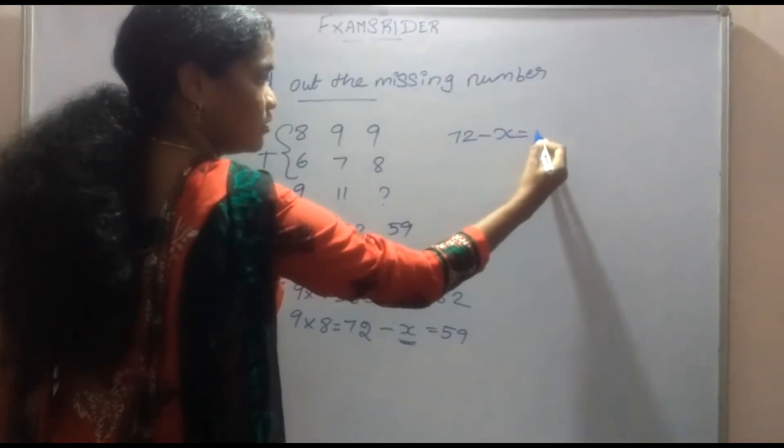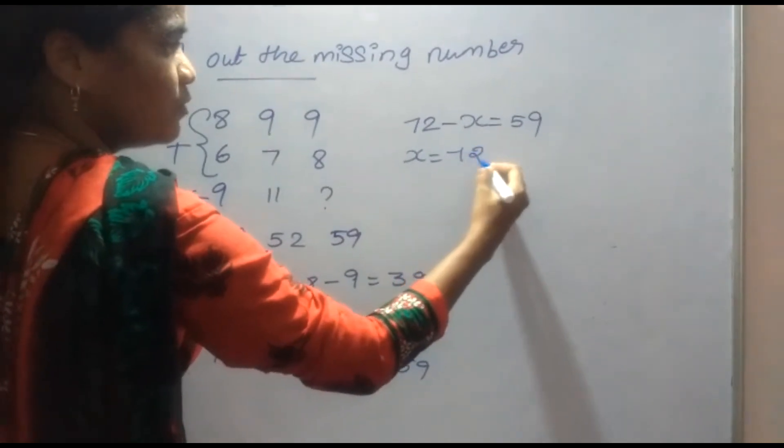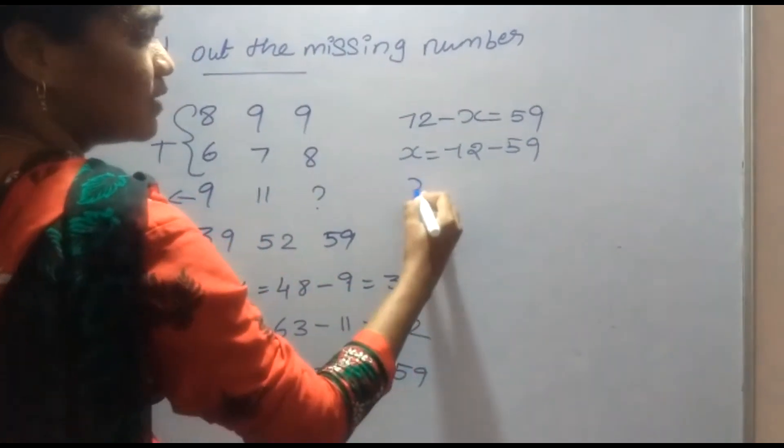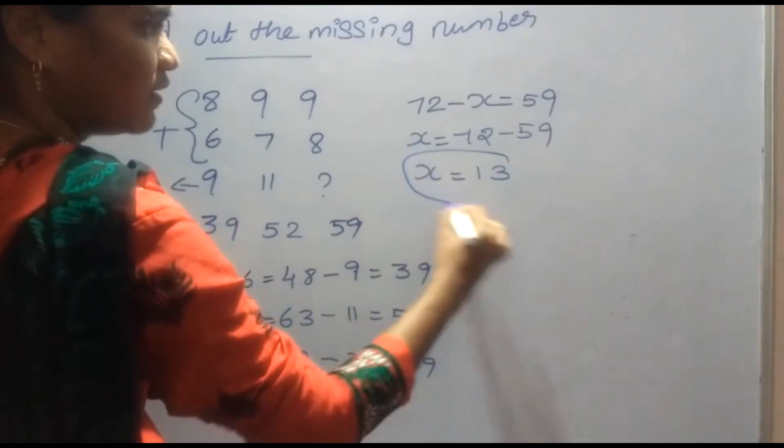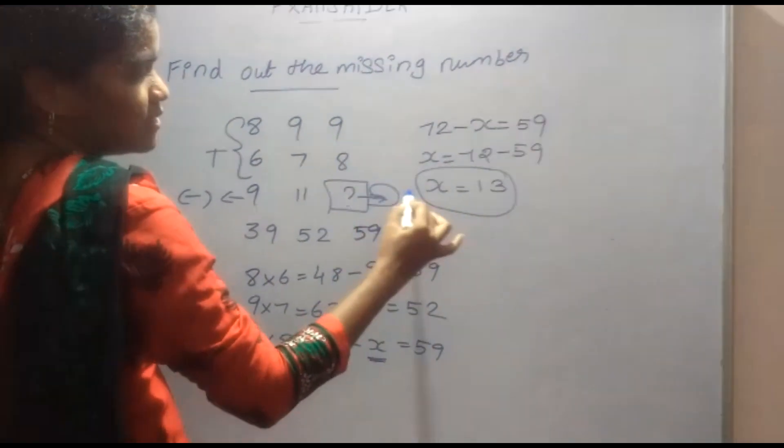That is 72 minus x is equal to 59. x is equal to 72 minus 59. x is equal to 13. The value in this place is 13.